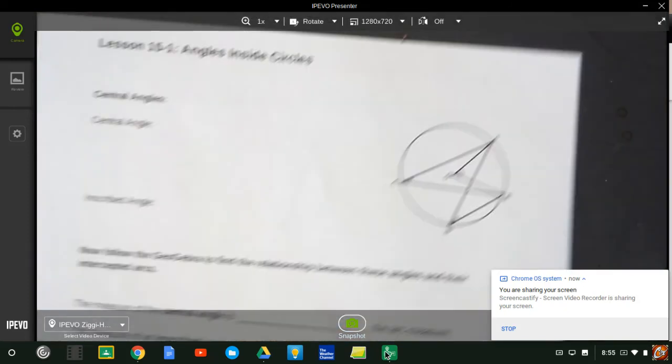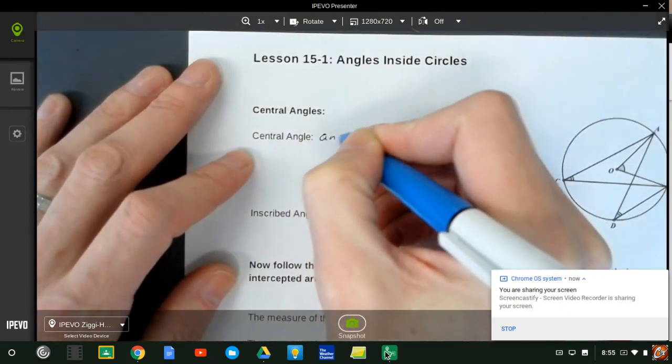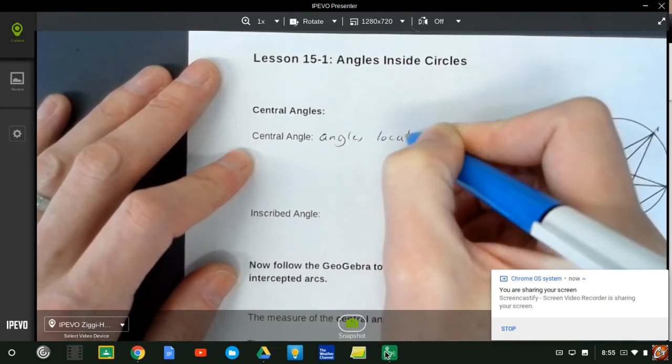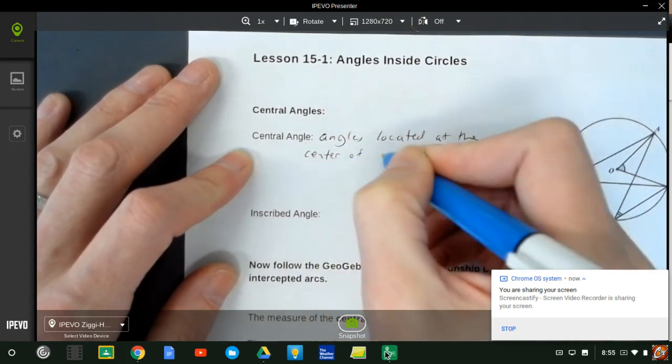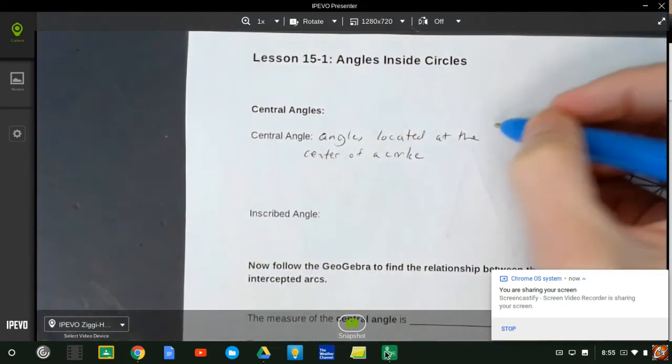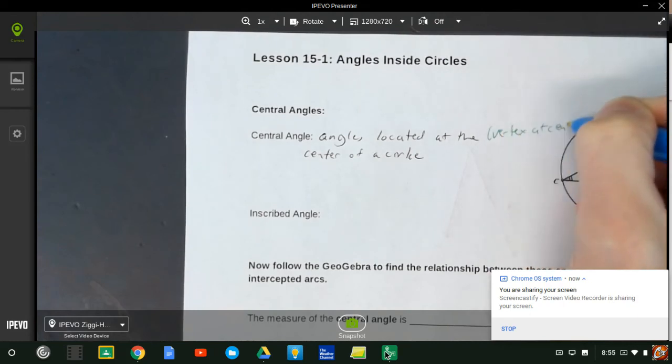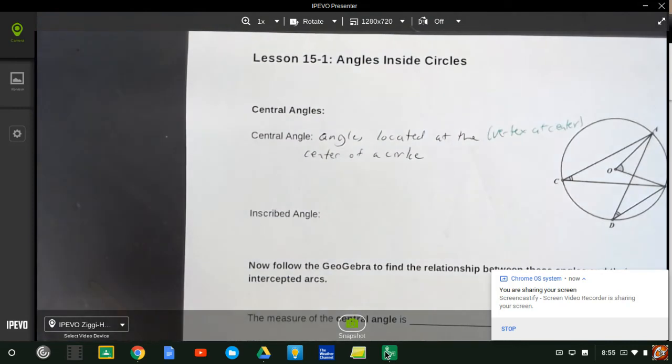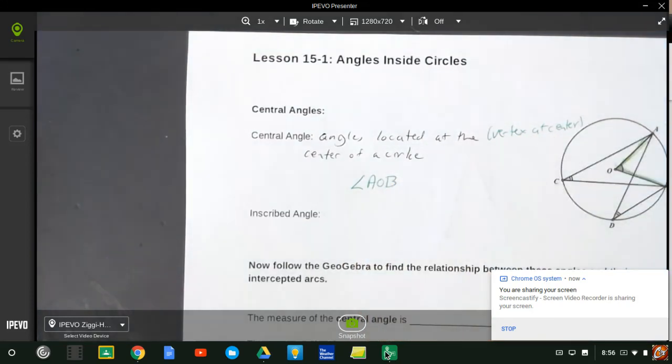So our next set of terms talk about central angles. And central angles are exactly what they sound like they are. They're angles located at the center of a circle. What that means is that the vertex is at the center. In fact, I'm going to write that. That's important. Vertex at center. So if I look at this, here I see this angle here. That's my center of my circle is O. And if I look at that angle, angle AOB is a central angle. So angle AOB is a good example of a central angle.